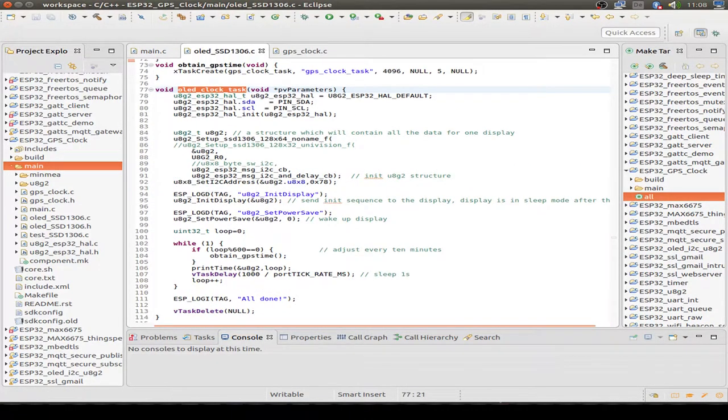We use the U8G2 library to display all the fonts and graphics on the display. I just set the right type of my display and initialize the U8G2 variable and set also the I2C address. For my display this is necessary. Then I initialize the display and wake up the display from power saving if necessary.